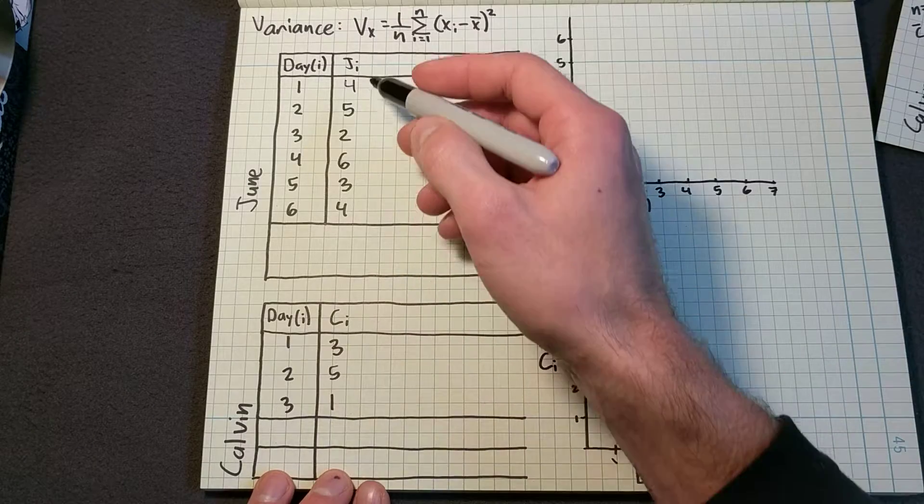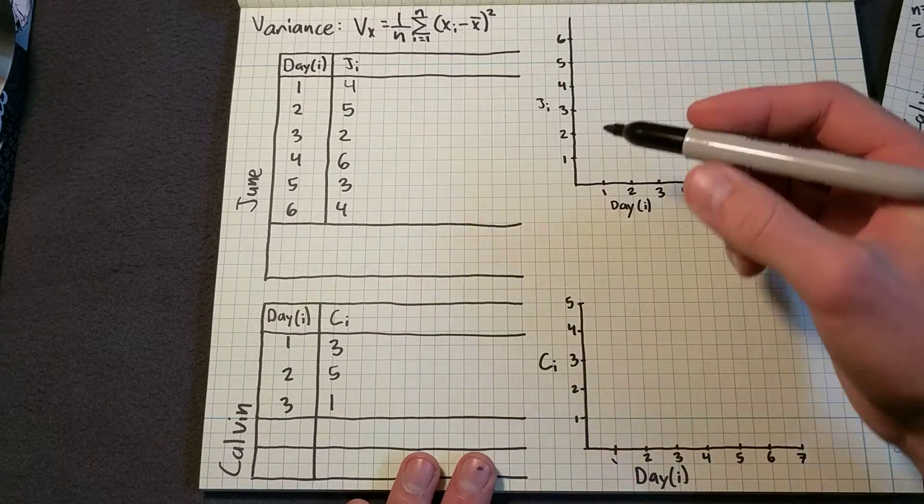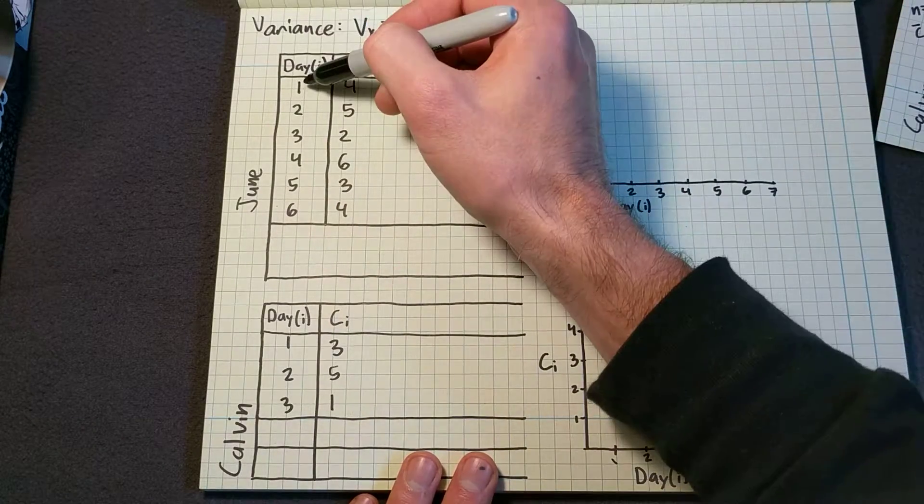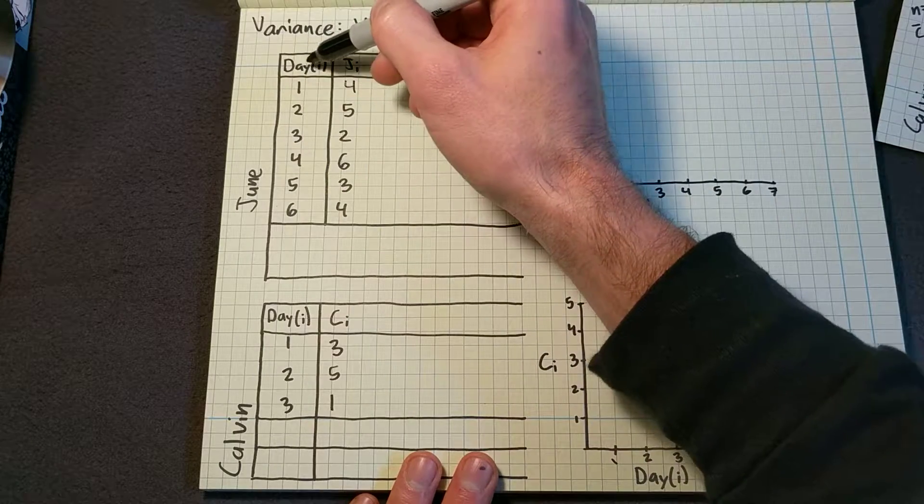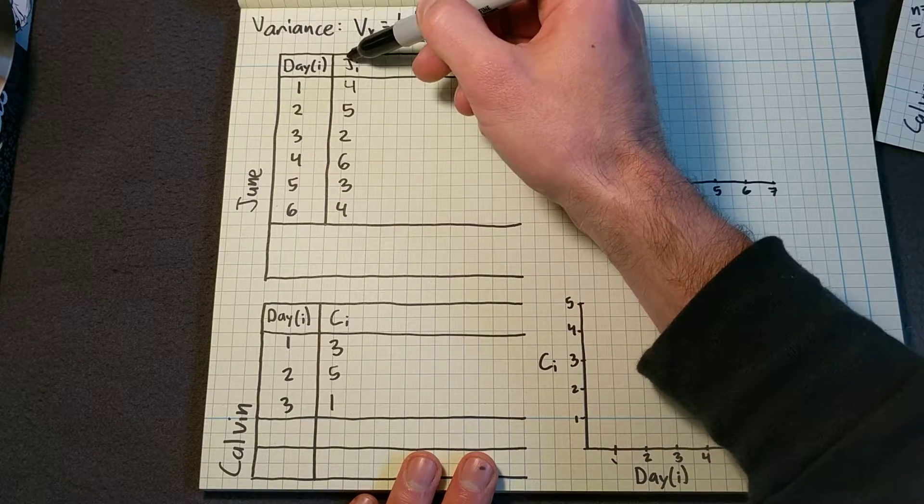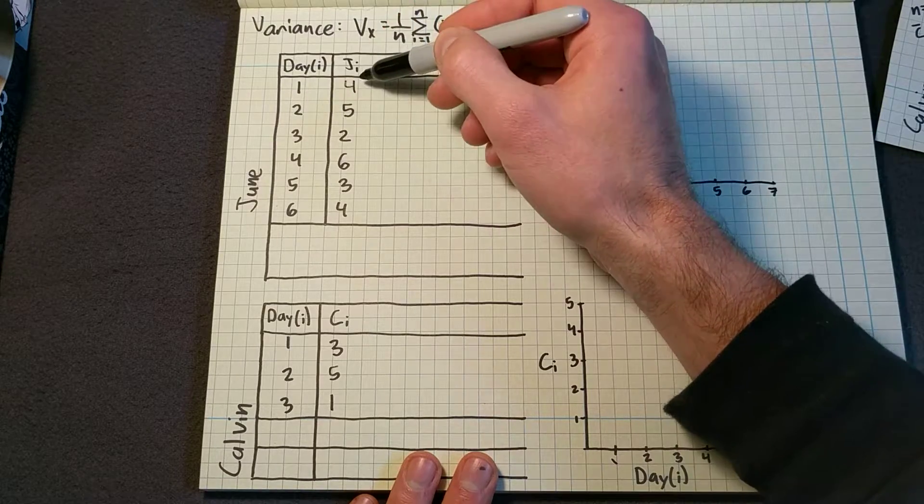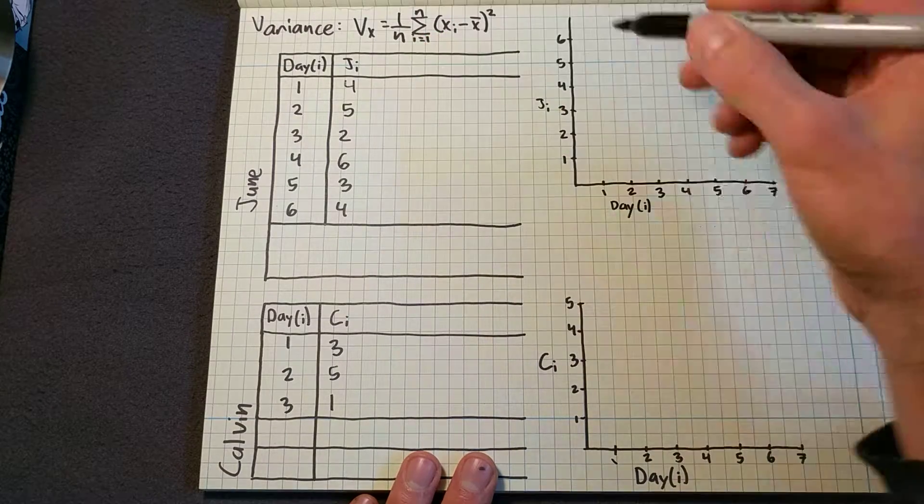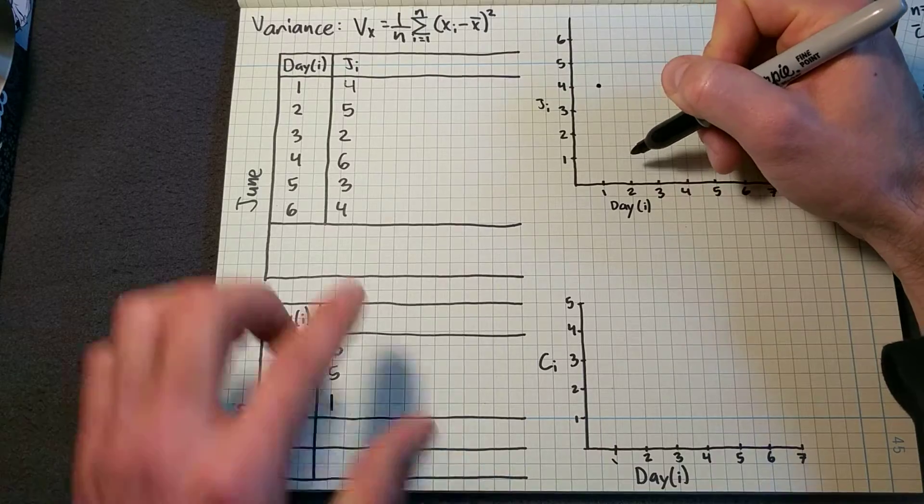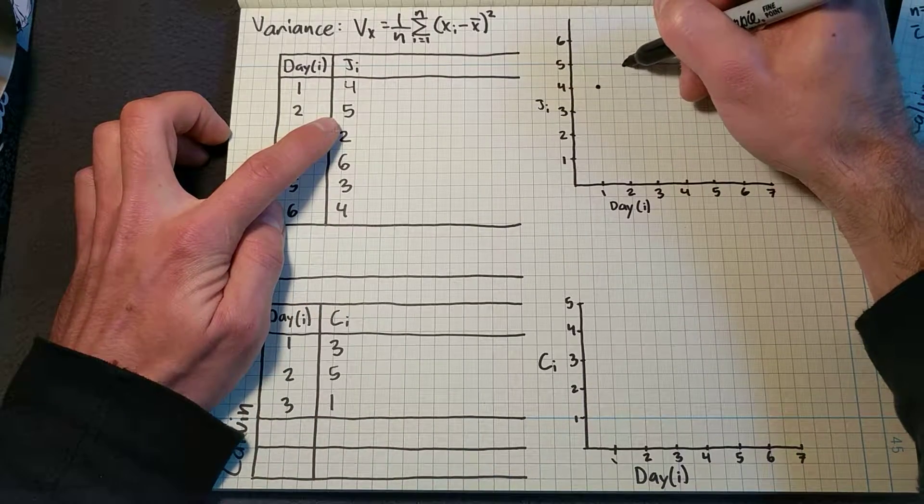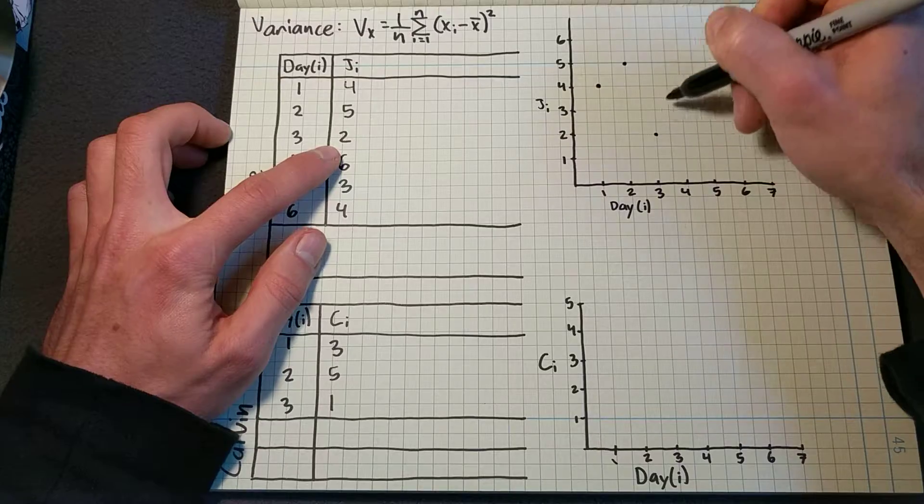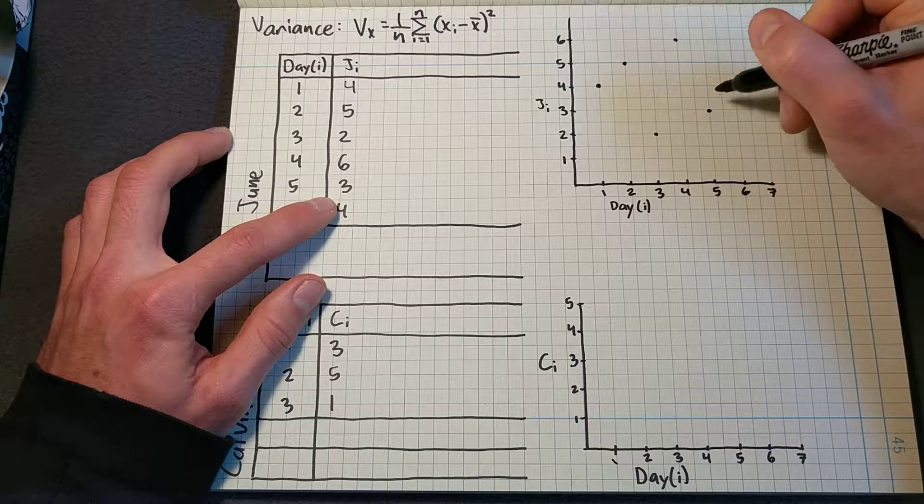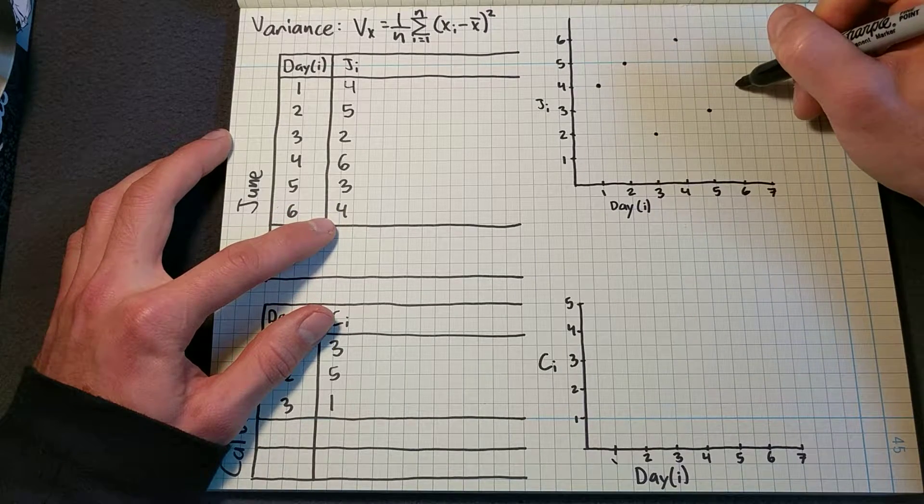So first thing I want to do is just plot these numbers and visually inspect them. So I'm calling this the day, so this is day i. So day i, June with a big J underscore i, this means that June eats four on day one. So on day one, June eats four, five, two, six, three, and four.